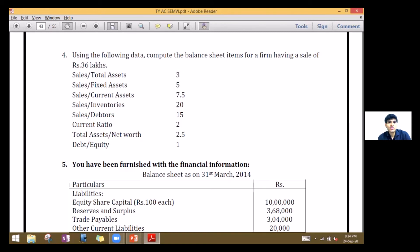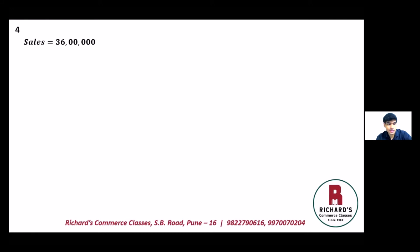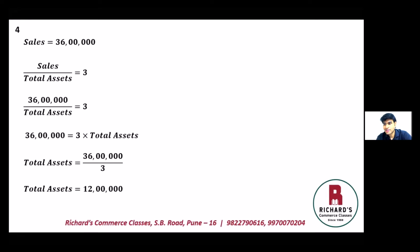Sales given is 36 lakh rupees. Using sales to total assets: 36 lakhs divided by total assets equals 3. Cross-multiplying, total assets equals 36 lakhs divided by 3, which is twelve lakh rupees.